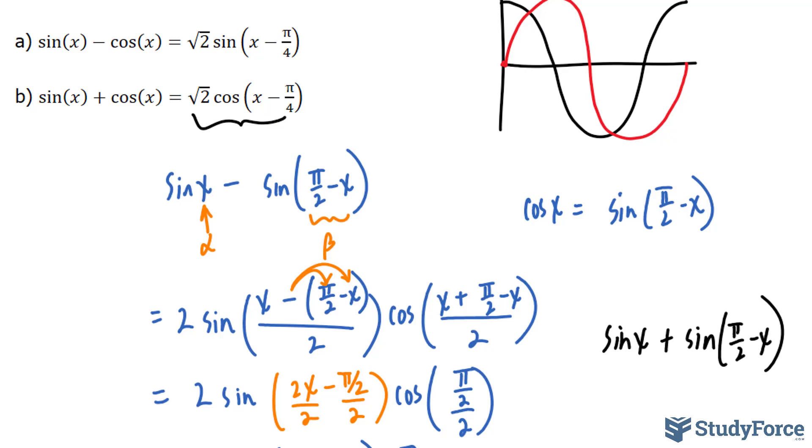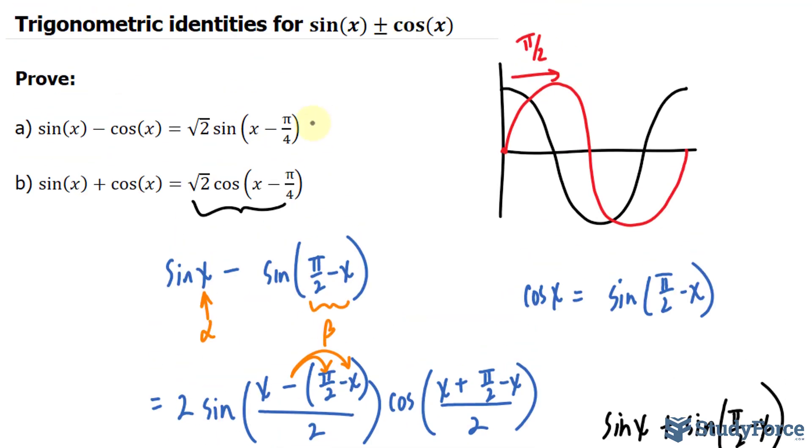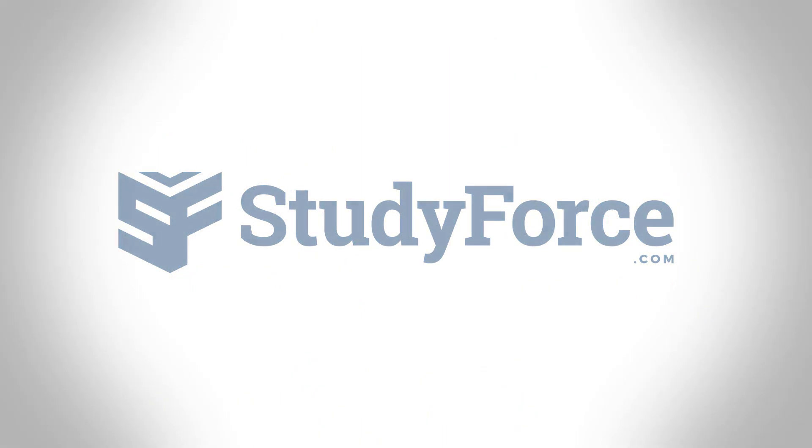And so, there you have it. Two very important trigonometric identities that you can use whenever you're stuck and have two terms of different trigonometric functions and you want to combine them into a single term.